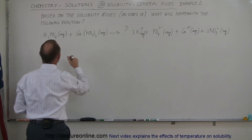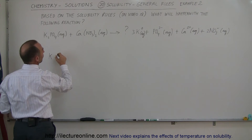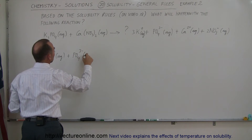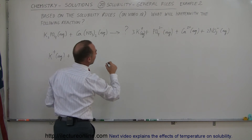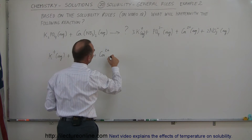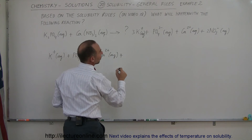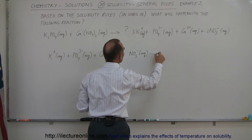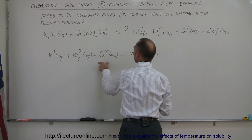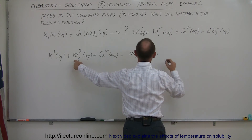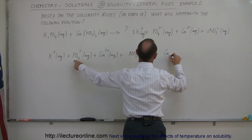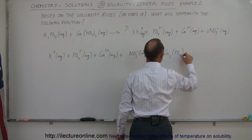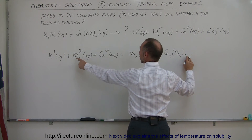So then the next result is: when we take the potassium ion in aqueous solution, plus the phosphate ion in aqueous solution, plus the calcium ion in aqueous solution, plus the nitrate ion NO3- in aqueous solution — phosphate and calcium are going to combine together. So we're going to need three calcium ions and two phosphate ions, giving us Ca3(PO4)2.